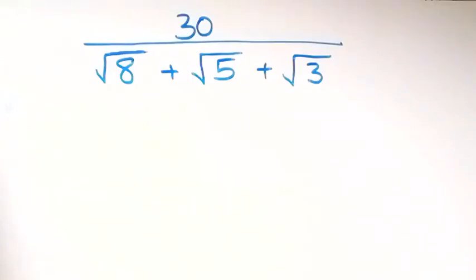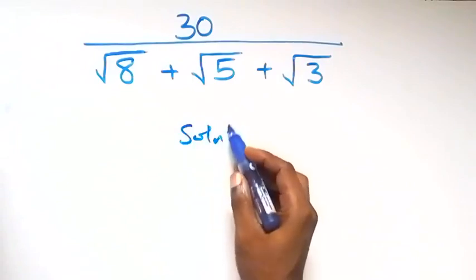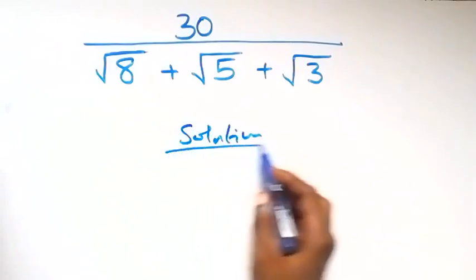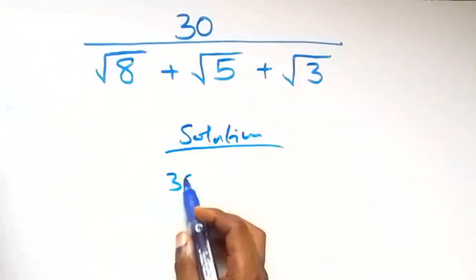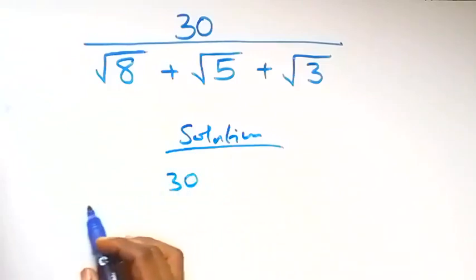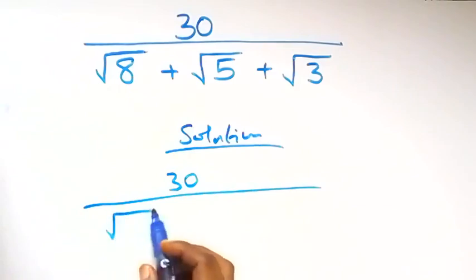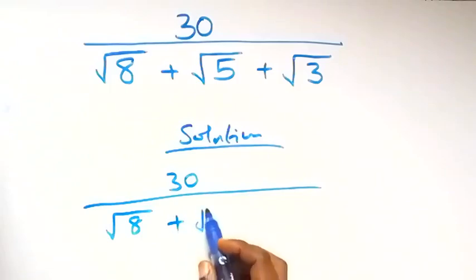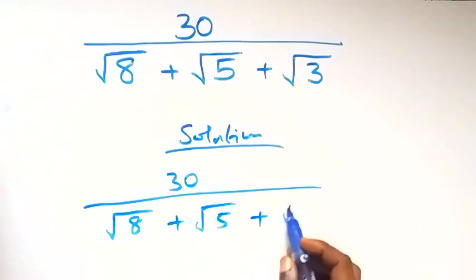Hello, you're welcome. How to solve this nice math problem. From what is given: 30 divided by root 8 plus root 5 plus root 3.